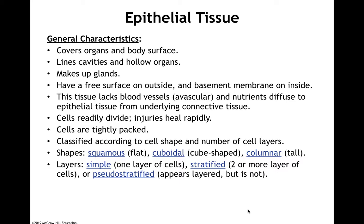Epithelial tissues generally do not have blood vessels — they are considered avascular. They get their nutrients by diffusion from tissues below them, the underlying connective tissue. However, cells that are classified as epithelial tissues tend to be able to divide very rapidly. Injuries to them heal quickly, provided there's enough nutrients getting to them.